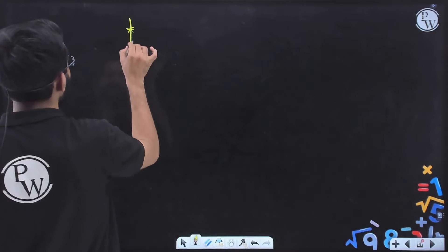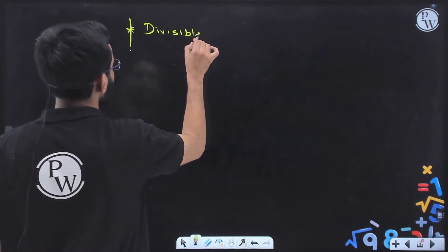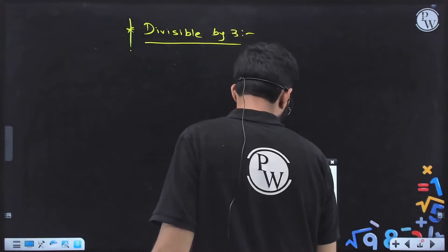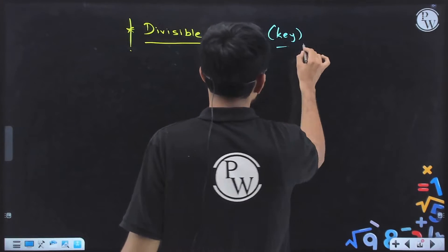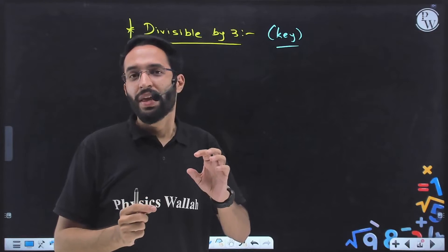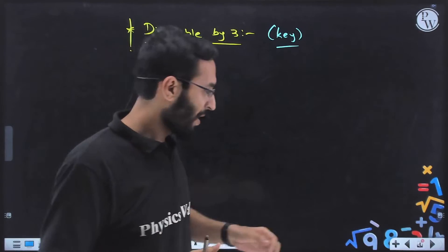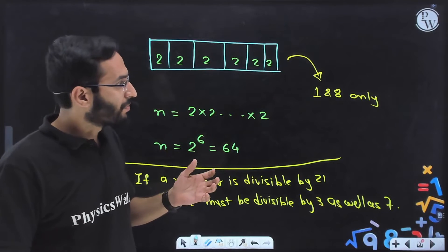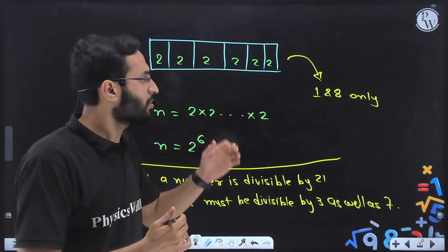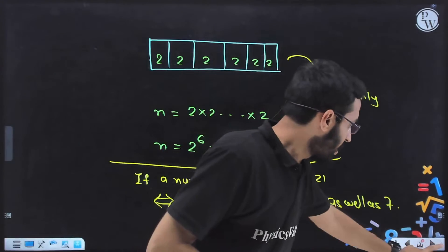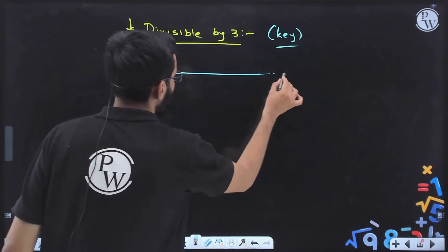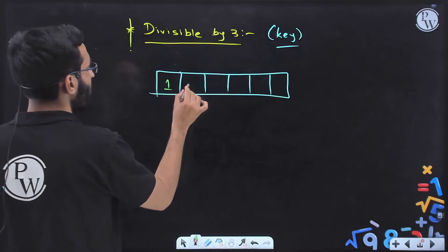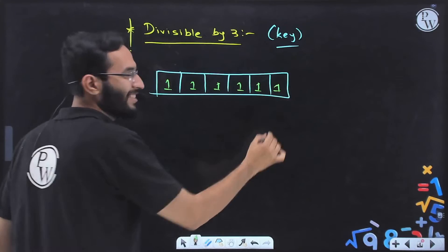So let us check divisibility by 3 first. We need to find how many of the 64 numbers are divisible by 3. The divisibility rule of 3 is: if the sum of all digits appearing in the number is divisible by 3, then that number is divisible by 3. Our six-digit number is made up of only 1 and 8. The smallest possible six-digit number using these digits is 111111.